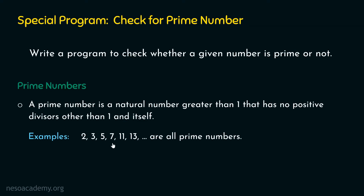Let's say we want to check whether 7 is prime or not. We can see that 7 is prime because 7 is not divisible by any other number except 1 and 7. Similarly, 13 is also a prime number because 13 is not divisible by any other number except 1 and itself — that is, 13. I hope it is clear what a prime number is, and now we are ready to write the program.